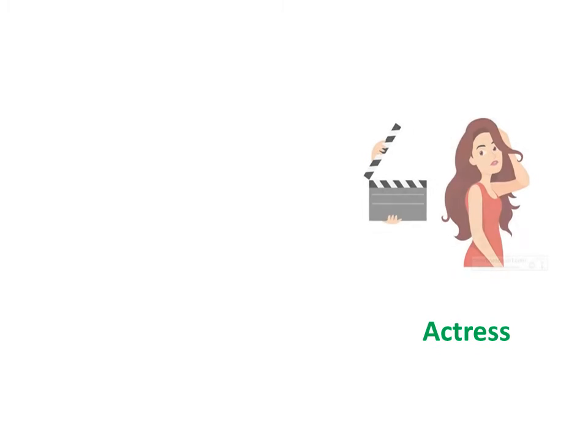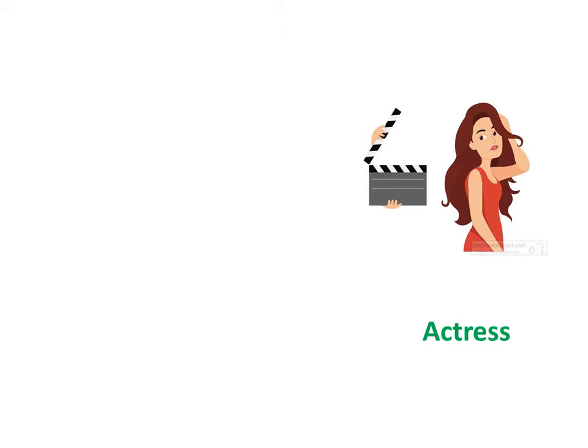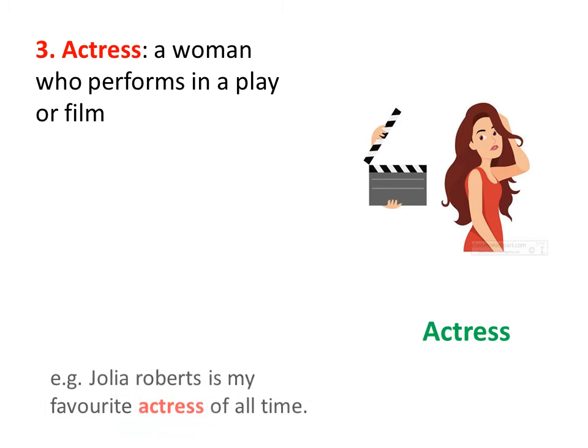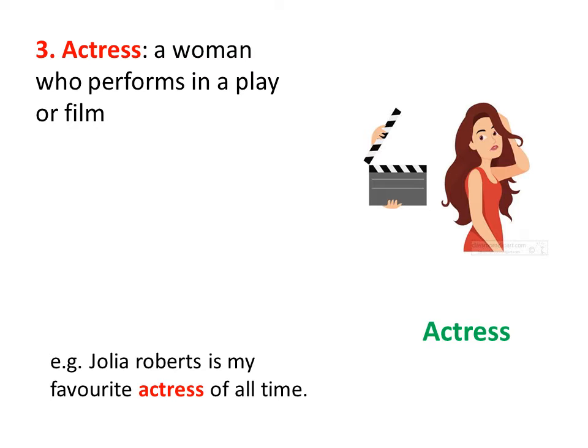Number 3: Actress. As you can see here in this picture, an actress is a woman who performs in a play or film. For example, Julia Roberts is my favorite actress of all time. So actress is a woman and actor is a man who performs or acts in a play or film.